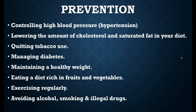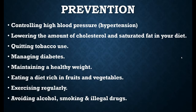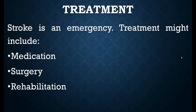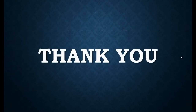You can prevent stroke by controlling high blood pressure, lowering cholesterol, quitting tobacco and smoking, managing diabetes, maintaining a healthy weight, eating a diet rich in fruits and vegetables, doing regular exercise, and avoiding alcohol and drugs. Diagnosis can be made by medical history, blood tests, CT scan, MRI, and ECG. Treatment is based on the type of stroke and symptoms, and includes medication, surgery, and rehabilitation.